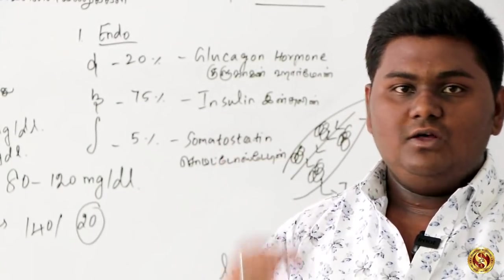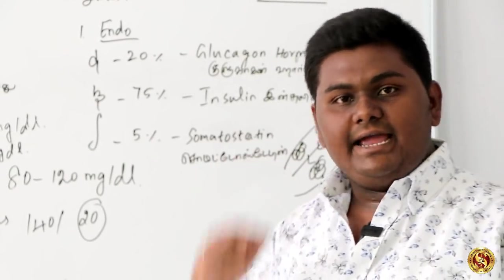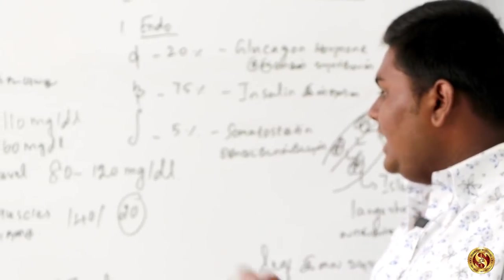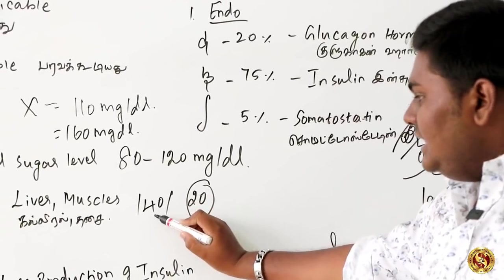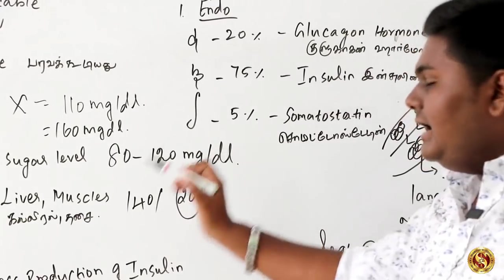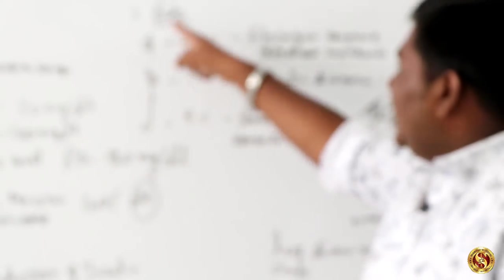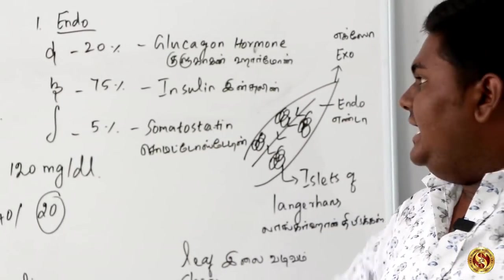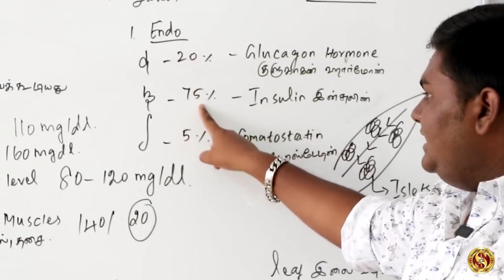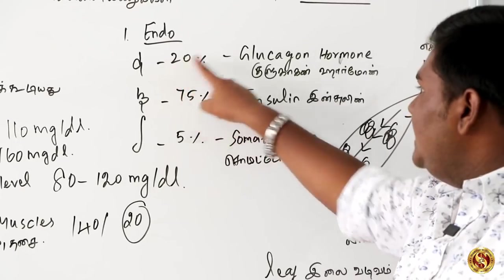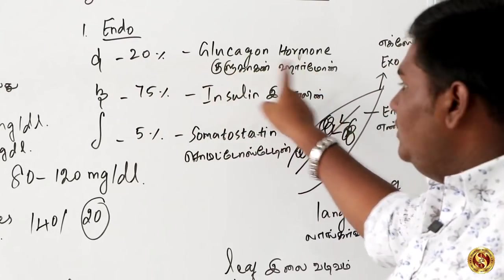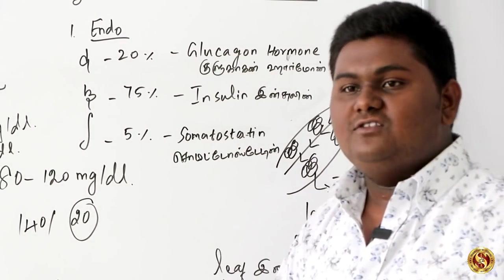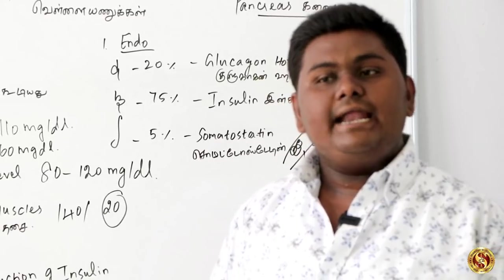The body's fuel is carbohydrate. When the body cannot convert carbohydrates, sugar raises in the blood. The Islets of Langerhans contains three types of cells: Alpha (20%), Beta (75%), and Delta (5%). Alpha cells secrete glucagon hormone. Beta cells secrete insulin, which is a protein hormone. Delta cells secrete somatostatin, which is a growth hormone or internal growth hormone.